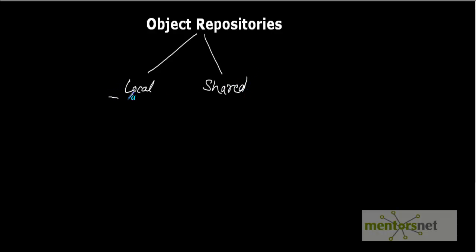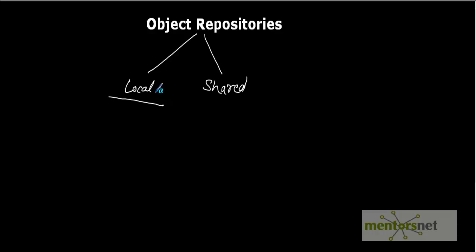In this video we'll discuss the local object repository, which is also referred to as a per-action object repository. The local object repository is the default object repository. It is specific to actions and is accessible when you are editing any script in the QTP editor. Local object repository cannot be reused — that is one of its major drawbacks.